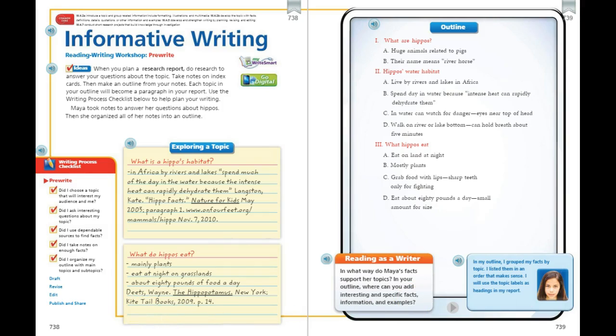So now, we're going to look at her outline on page 739. So here we have what are hippos. Huge animals related to pigs, and their name means river horse. And then the second heading is hippo's water habitat.